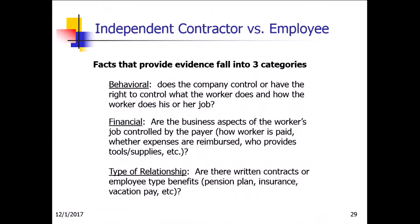There's evidence that falls into three categories to distinguish the difference between employees versus independent contractors, and they are behavioral, financial, and type of relationship.